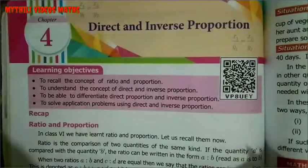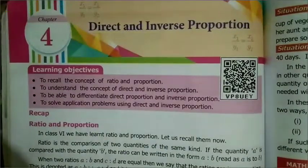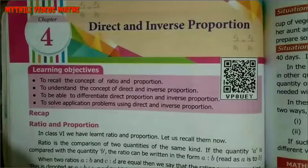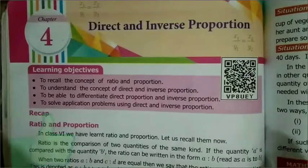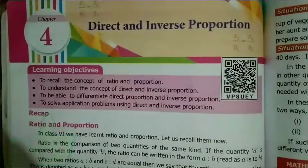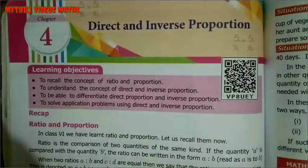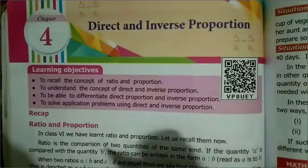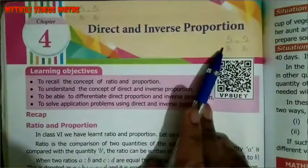The number of pens is increasing, the cost is also increasing. Suppose the number of pens is decreasing, the cost is also decreasing. When both quantities increase or decrease together, that is called Direct Proportion.